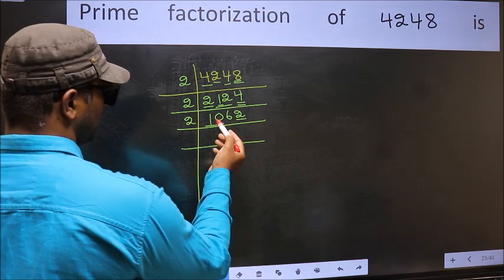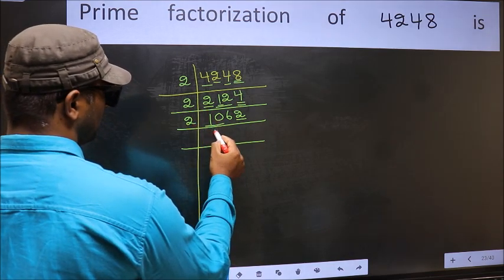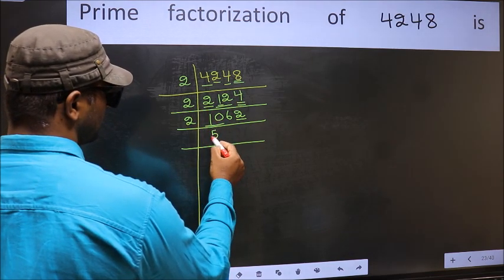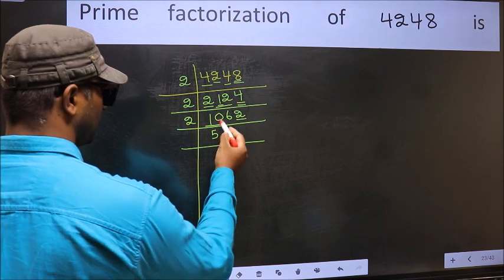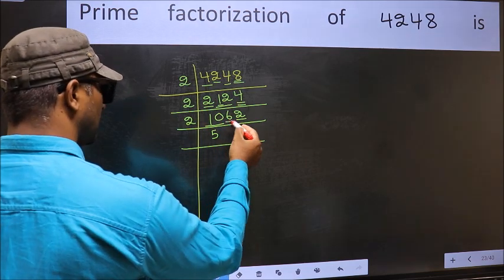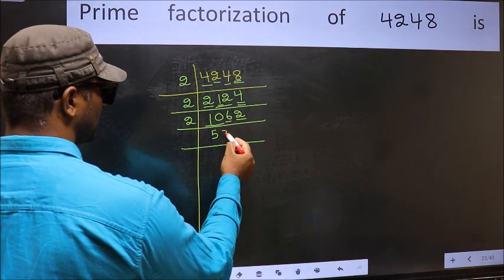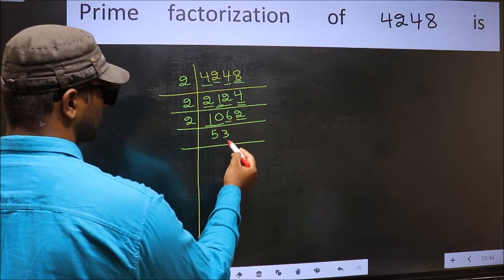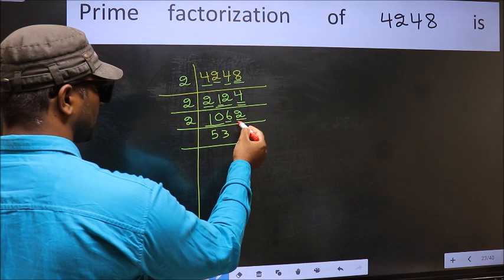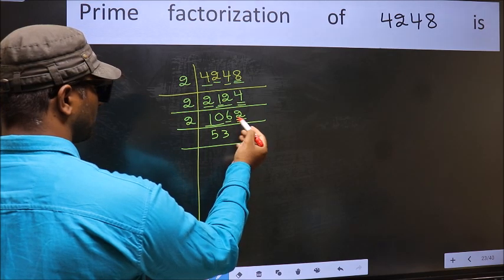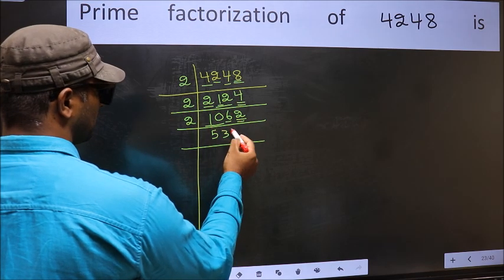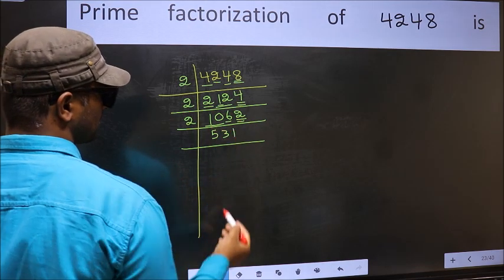Now, 10 — when do we get 10 in the 2 table? 2, 5's 10. The other number 6 — when do we get 6 in the 2 table? 2, 3's 6. The other number 2 — when do we get 2 in the 2 table? 2, 1's 2.